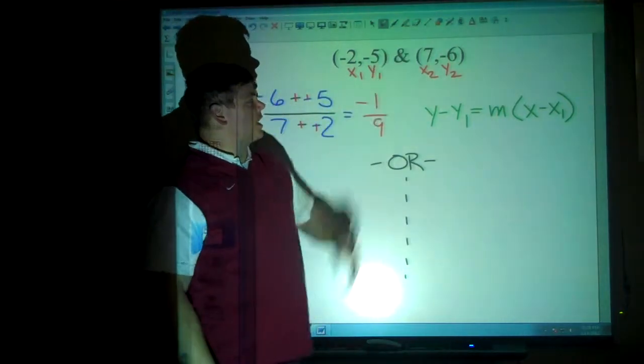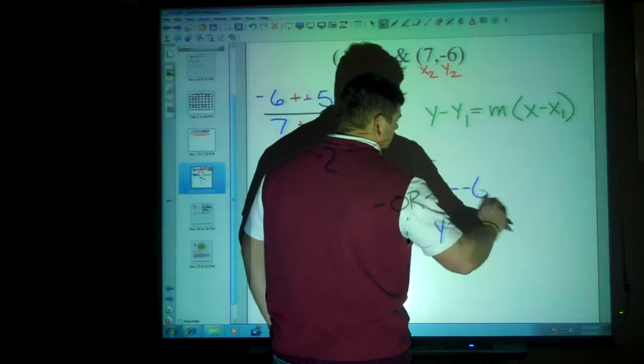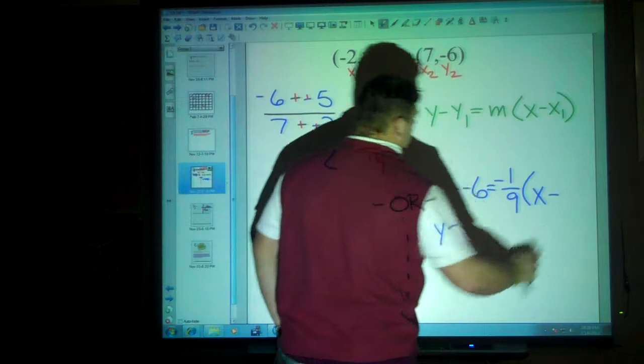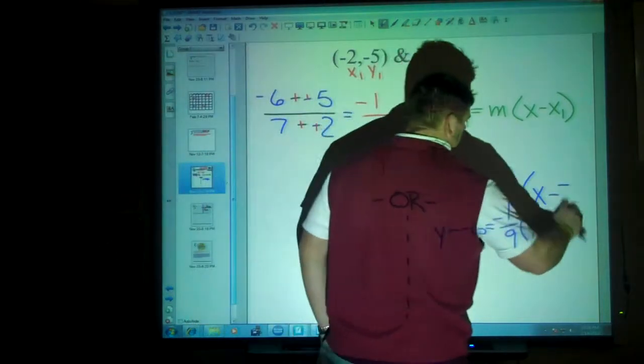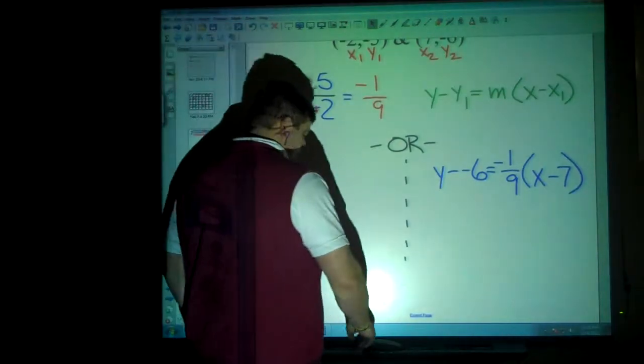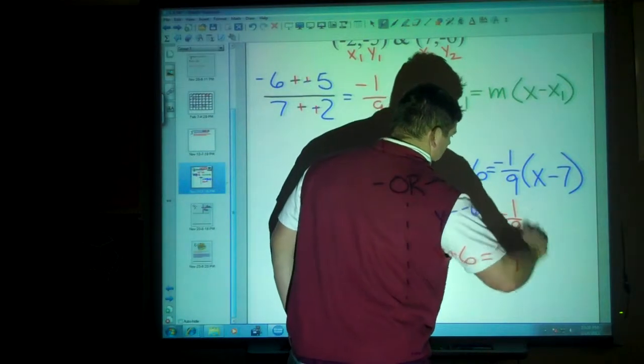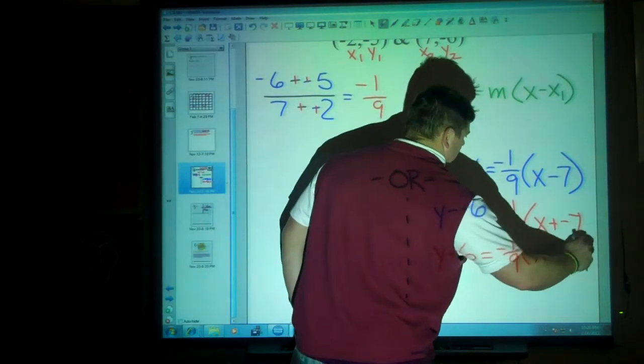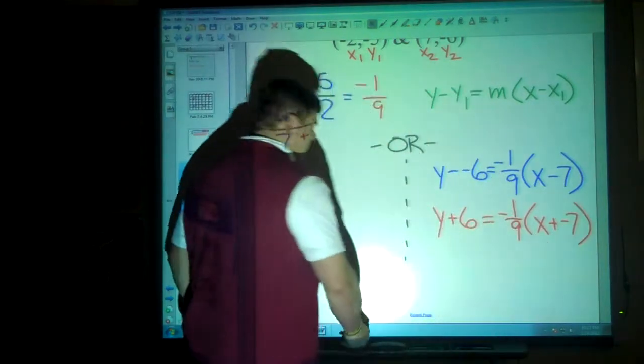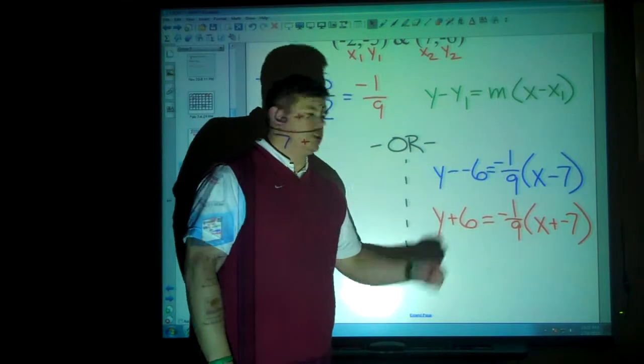So let's say I use the coordinate on this side. Then I will have y minus the negative 6 is equal to our slope of negative 1 ninth times x minus that x. I might change my signs so that I don't have those subtractions. And I could say y plus 6 is equal to negative 1 ninth x plus negative 7. There's no difference between these answers other than I change the signs so that it's all addition.